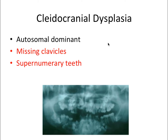Cleidocranial dysplasia came up almost 10 questions on my exam — I've probably got over six questions on it alone, so definitely know this one. The two key things: missing clavicles is a very common sign, and it involves supernumerary teeth — a crazy amount of extra teeth that shouldn't be there. Usually the patient has to undergo a series of extractions and have dentures placed. Remember: missing clavicles and many, many teeth.